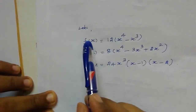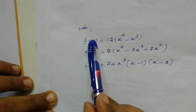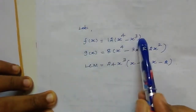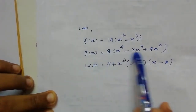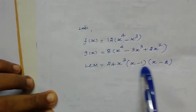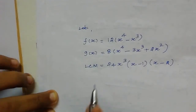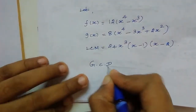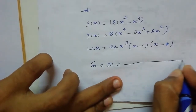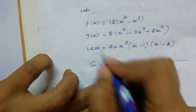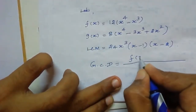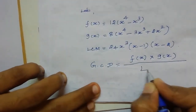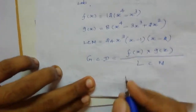First we need to write the given two polynomials as f(x) and g(x). Let f(x) equal the first given polynomial, g(x) equal the second polynomial, and write the LCM value also. For this question we need to find out the value of GCD. We already know the GCD formula: f(x) × g(x) divided by LCM value.